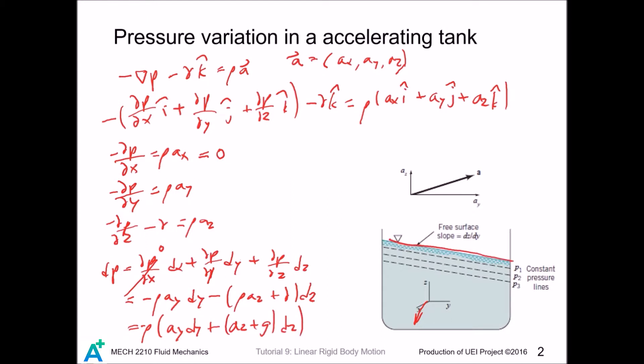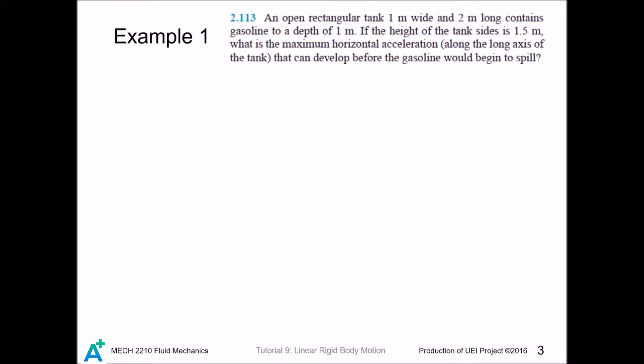For a constant pressure line, we have dp equals zero. Solving for dz/dy, which is the slope of this line, and if we mark this angle as theta, then this is tangent theta. Now we do two examples with the formula we just derived. Here is the first example.